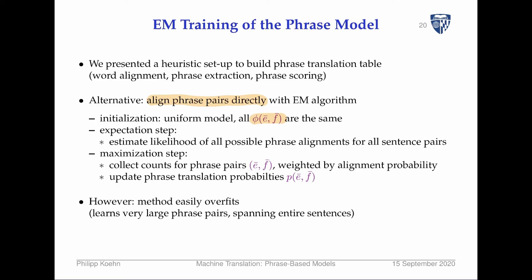However, if you actually run this EM algorithm, it tends to overfit. It learns really long phrase pairs spanning entire sentences. Since it can learn arbitrary lengths, what it ultimately learns is that for this sentence pair, whenever you see this sentence, that translation is the most likely with 100% probability. That's zero entropy — so it's natural that's the endpoint, but therefore not a good algorithm.